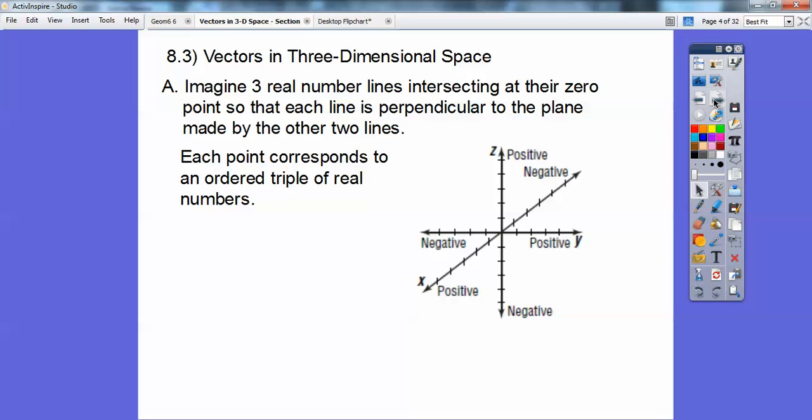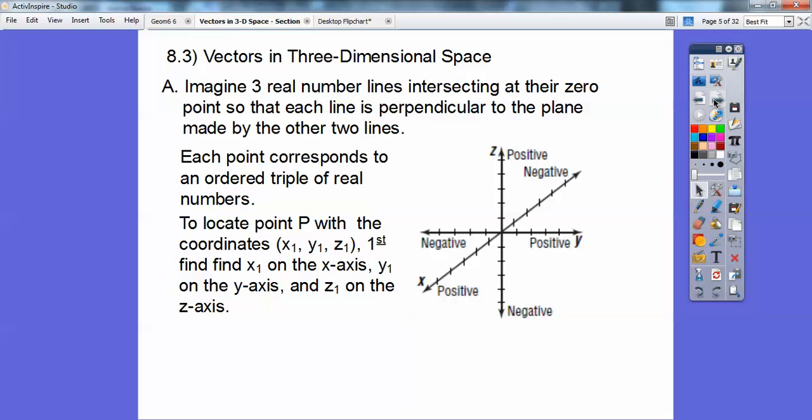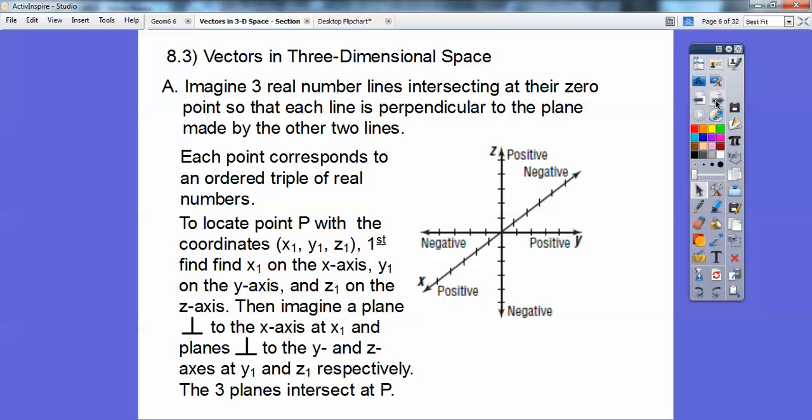So each point corresponds to an ordered triple of real numbers. To locate the point with the coordinates (x₁, y₁, z₁), first find x₁ on the x-axis, say it was like 2. And then find y₁ on the y-axis, say that was like negative 3. And then z on the z-axis, say it was like up here 5. And then imagine a plane that's perpendicular to the x-axis at that x value, perpendicular to the y-axis and the z-axis at the y and z values, respectively. So the 3 planes would intersect at point P.